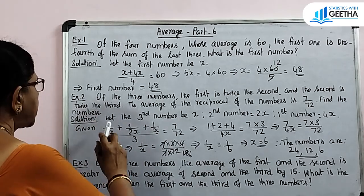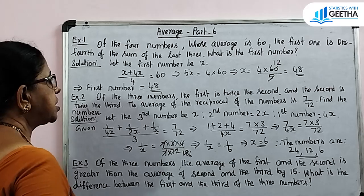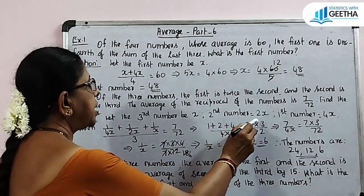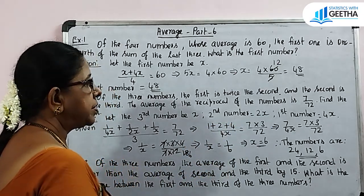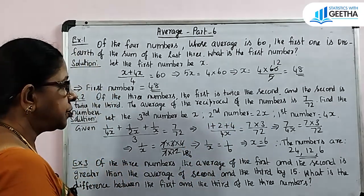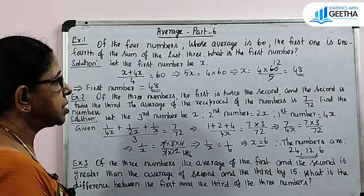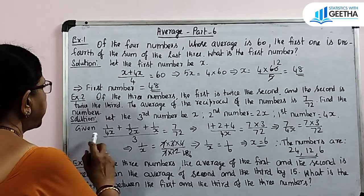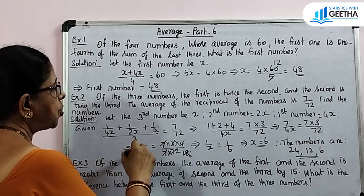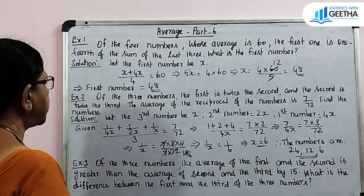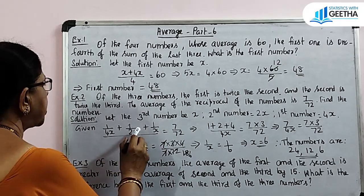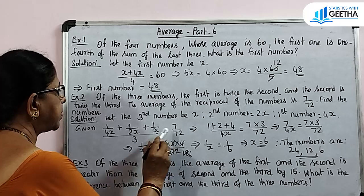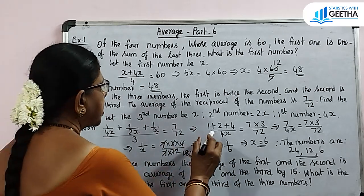Let the third number be x. The second number is 2x. The first number is twice the second, that is 4x. Therefore, the average of reciprocals: 1 by 4x plus 1 by 2x plus 1 by x, divided by 3, equals 7 by 72.